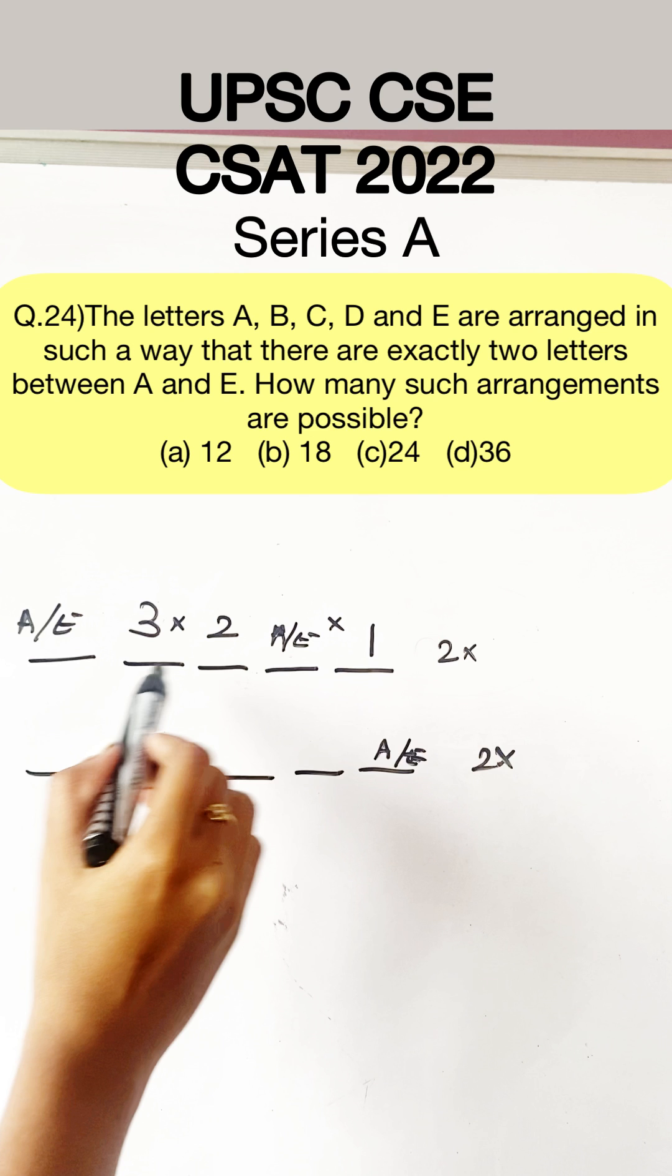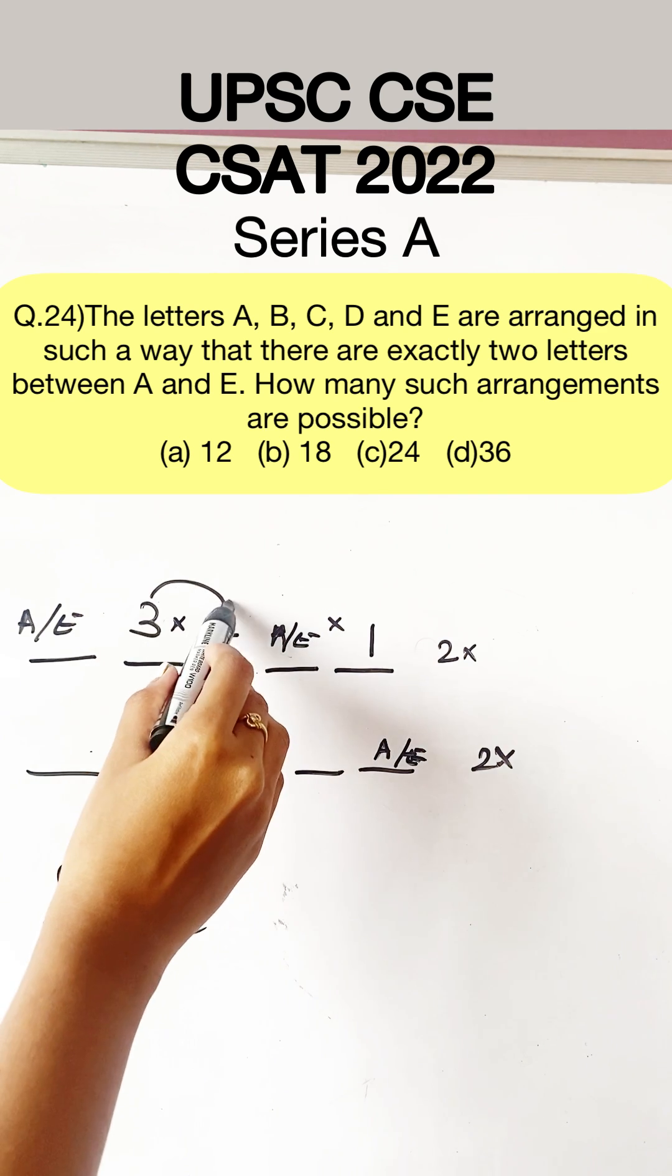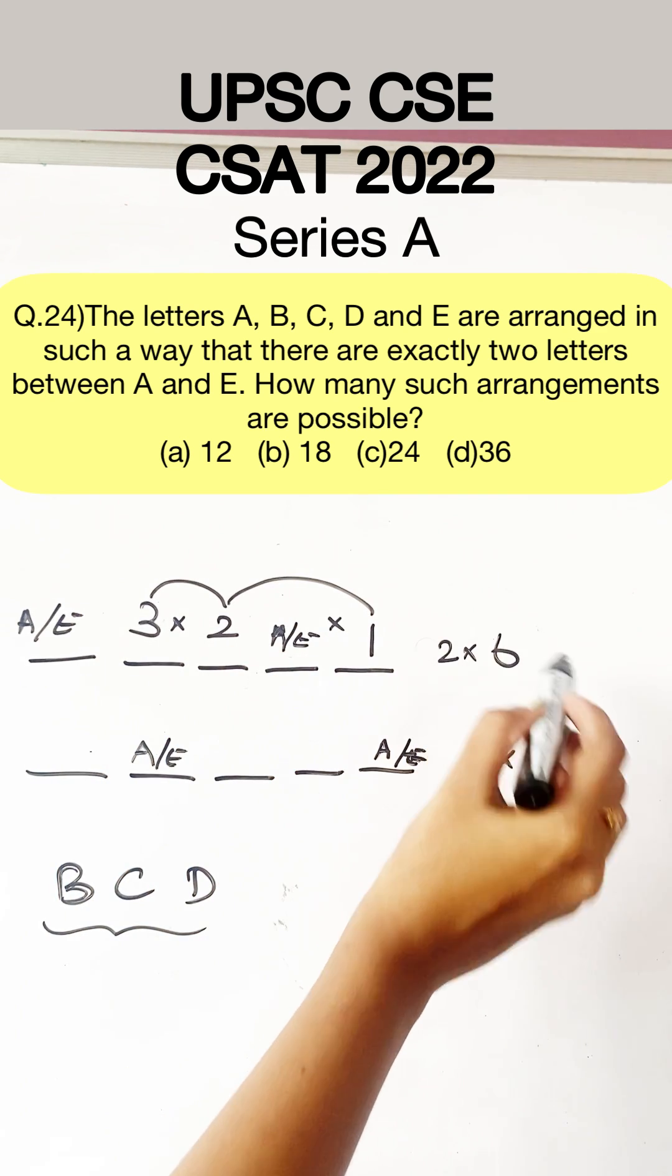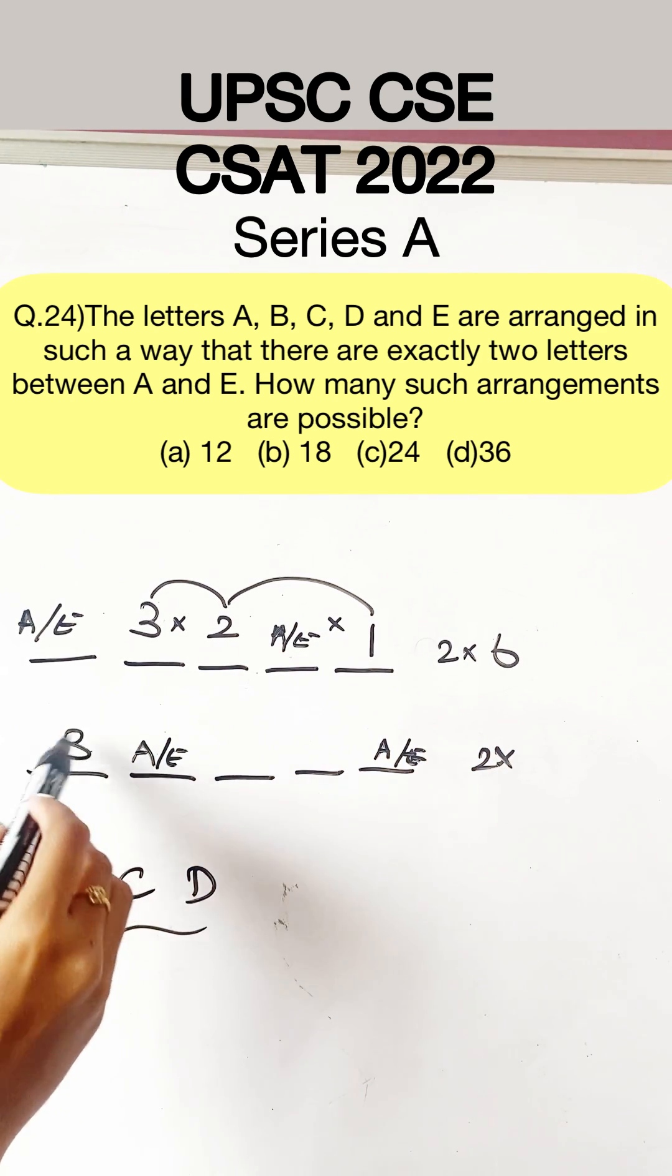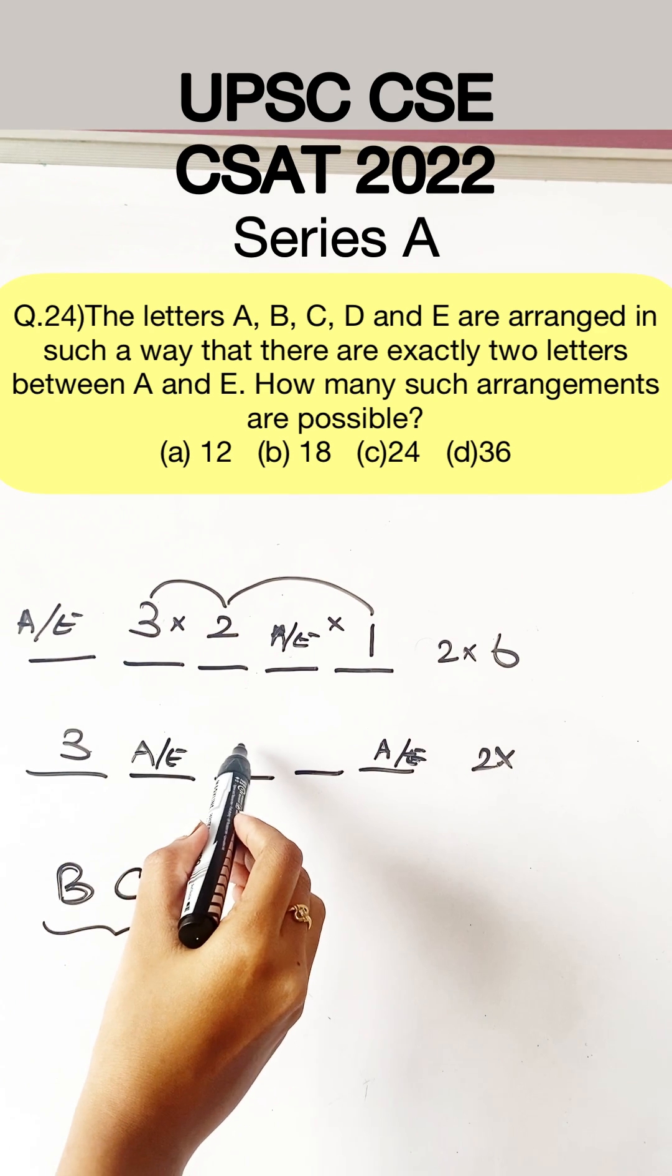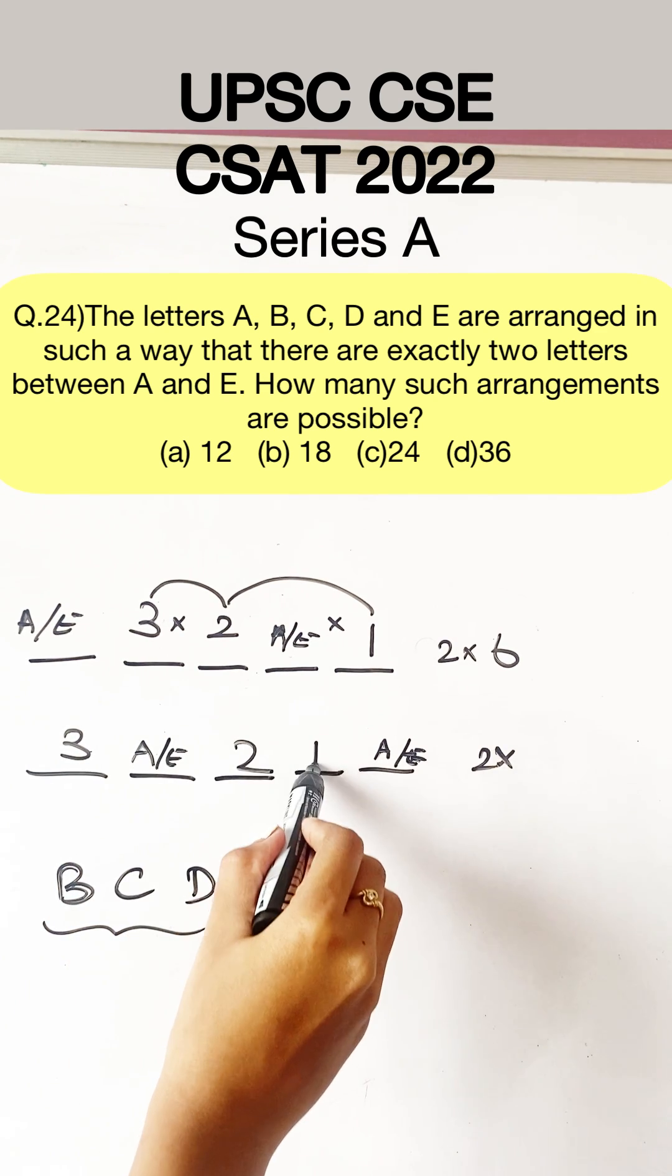When you need to know all the possible combinations without repetition, you need to multiply the factorial. So this will become three into two into one. That is why it became six. The same condition will follow here. There are three possibilities and then it becomes two here, it becomes one here.